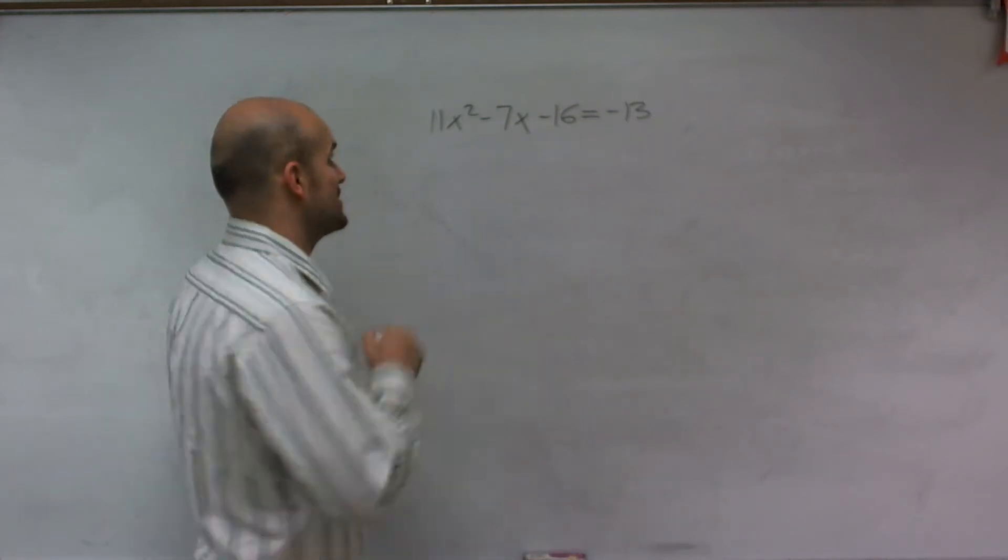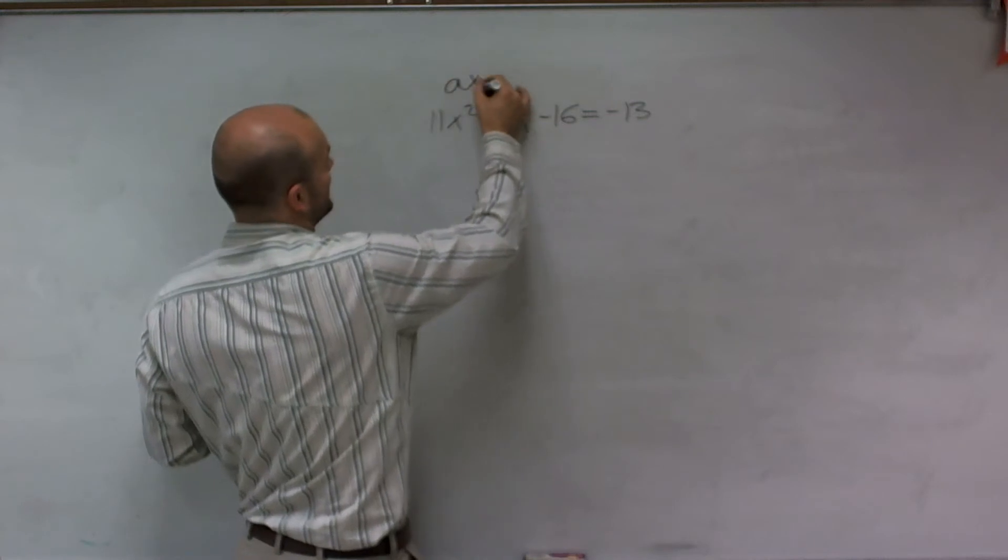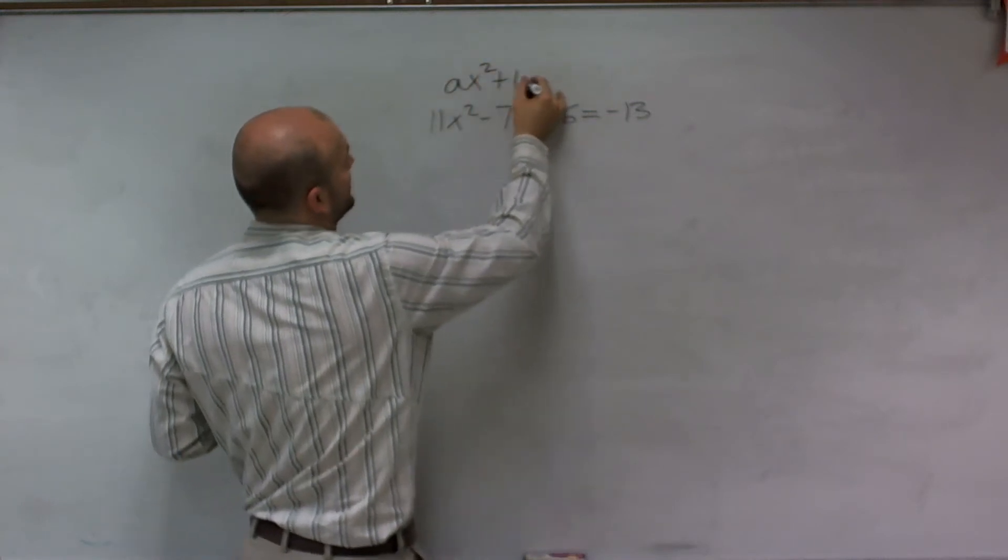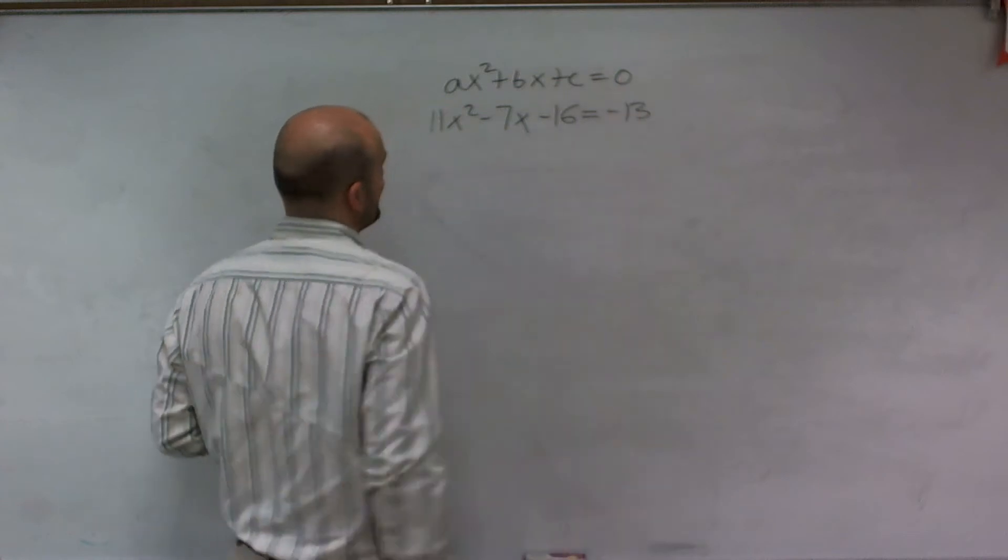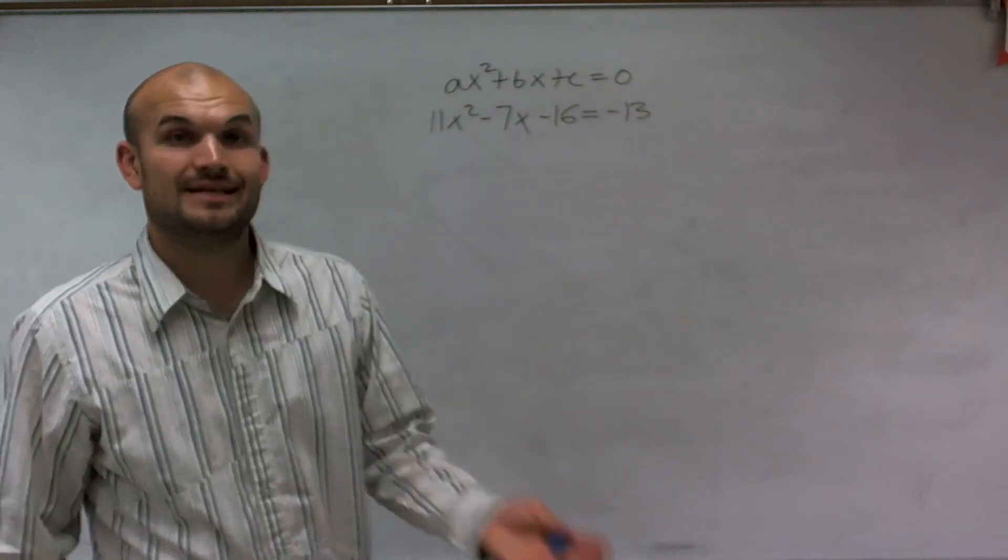So remember, why is this a quadratic? Well, remember, for it to be a quadratic, we have to have that x squared. And we can always write a quadratic in the form of ax squared plus bx plus c equals 0.